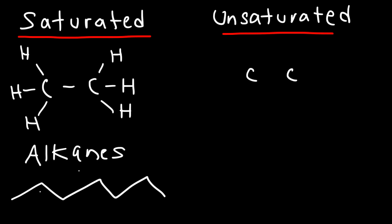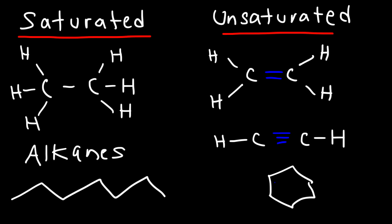Unsaturated hydrocarbons include alkenes, whenever you have a carbon-carbon double bond. Alkynes, those are unsaturated. And even a benzene ring, that's another unsaturated hydrocarbon. So anytime you have a pi bond. So if the molecule has any double bonds or triple bonds, it's an unsaturated hydrocarbon. If it only contains single bonds, then it's a saturated hydrocarbon. So make sure you understand that unsaturated hydrocarbons include alkenes, alkynes, and aromatic rings. And only alkanes are saturated.